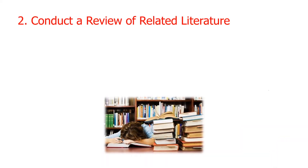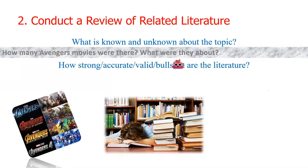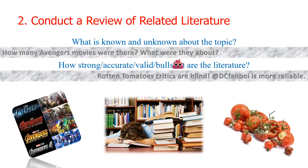Step 2: Conduct a review of related literature. What is known and unknown about the topic? We have to do our preliminary and secondary literature search. Another question is: How strong or accurate are the available literature? This involves critical review of each piece of literature. For our sample study: How many Avengers movies were there and what are the plots? In terms of accuracy and validity — which sources do I consider accurate and valid, and which are not?